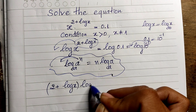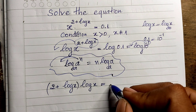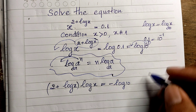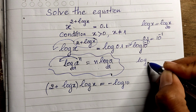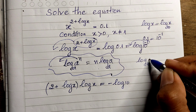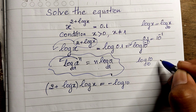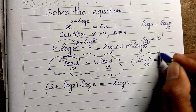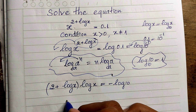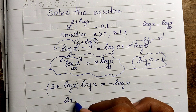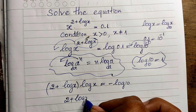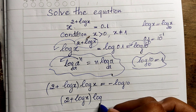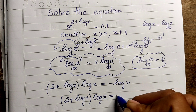So we get: (2 plus log of 8) multiplied by log of 8 equals minus log of 10. And we know that log base 10 of 10 equals 1, so the equation becomes: (2 plus log base 10 of 8) multiplied by log base 10 of 8 equals minus 1.